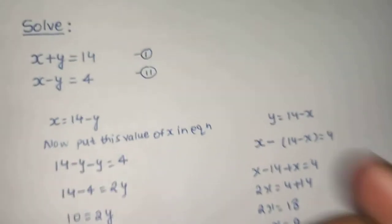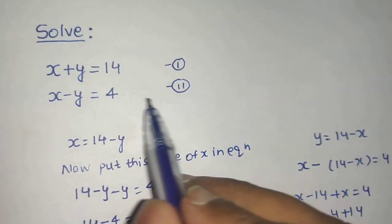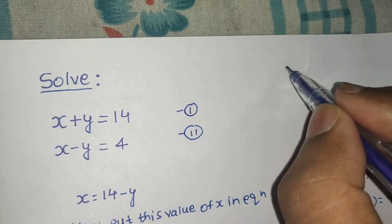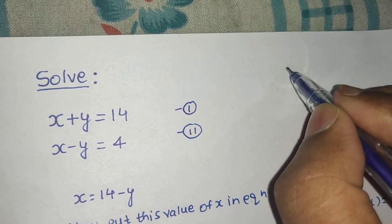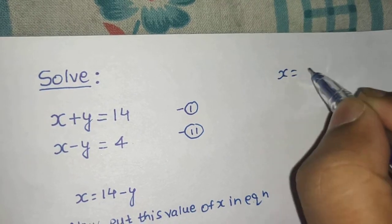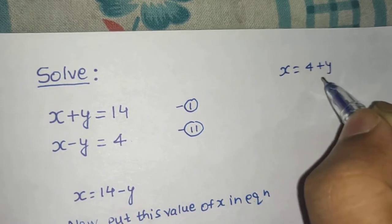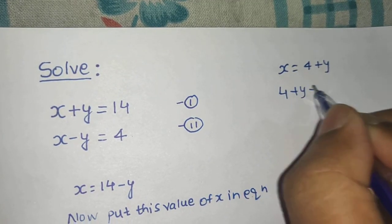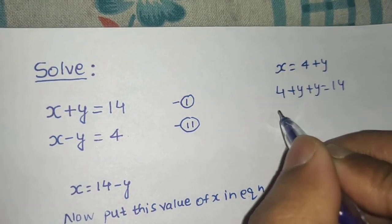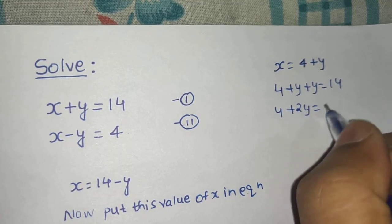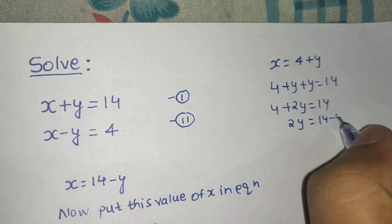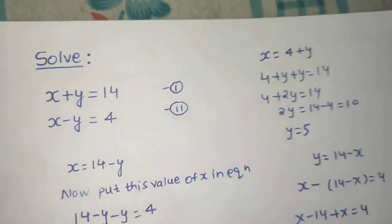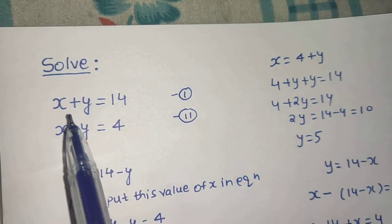You can also take the value of x or y from the second equation. Let's suppose you take from the second equation the value of x as 4 plus y. Put this in the first equation: 4 plus y plus y equals to 14, so 4 plus 2y equals to 14, giving 2y equals to 10, and y equals to 5. Any method you choose, the basic concept remains the same.